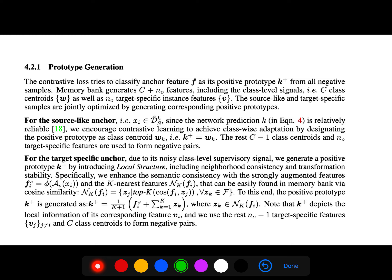For the source-like anchor, since the network prediction is relatively reliable, we encourage contrastive learning to achieve class-wise adaptation by designating the positive prototype as the class centroid.